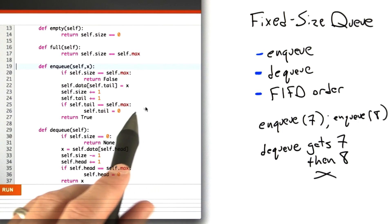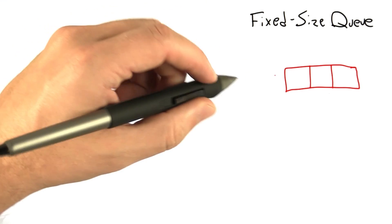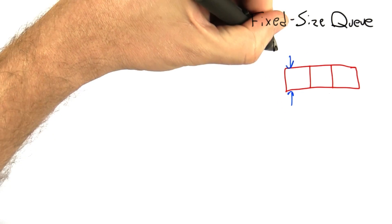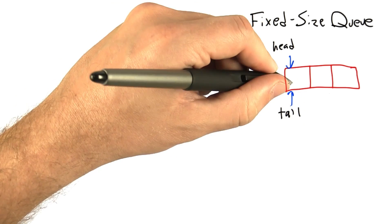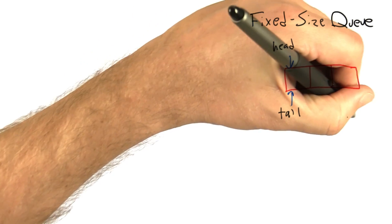Let me show you how our representation works. For demonstration purposes, we're going to look at a three-element queue. Initially, it's going to have a head and a tail pointing to the first queue element with index 0, and its size is going to be 0.